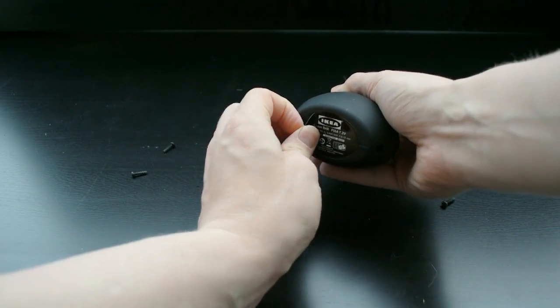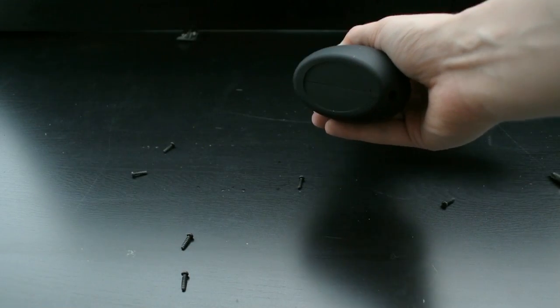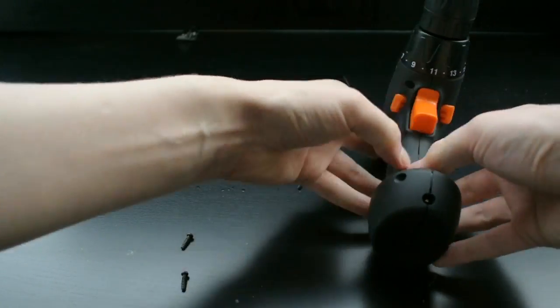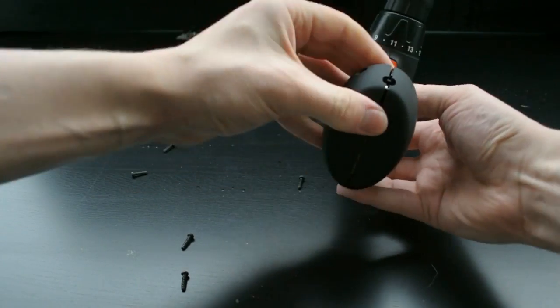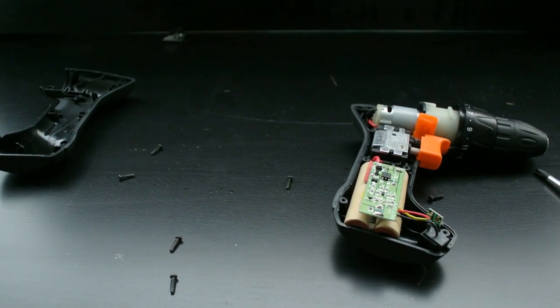We're going to have to peel the sticker from the bottom to be able to open the case. The case should come apart by just pulling the sides to different directions. And there we go, the case is open.